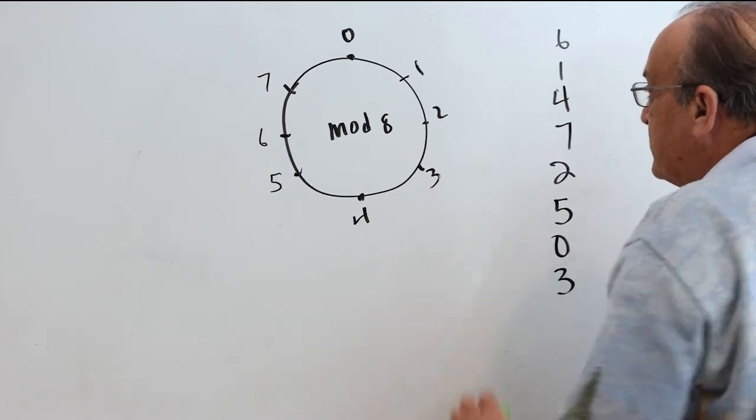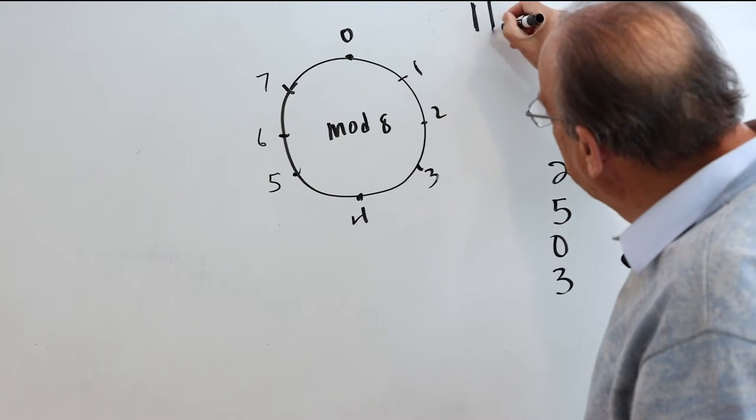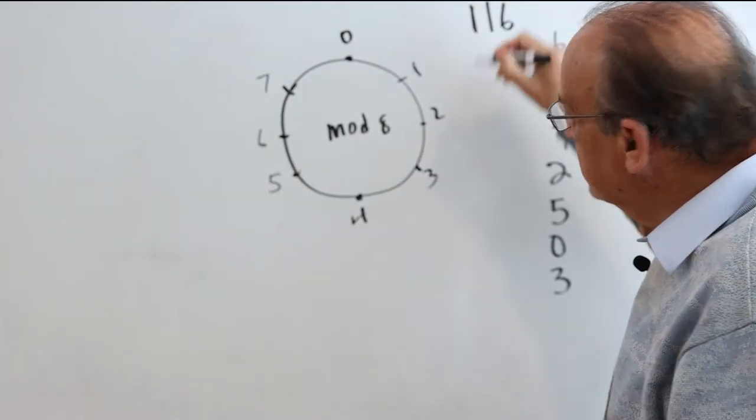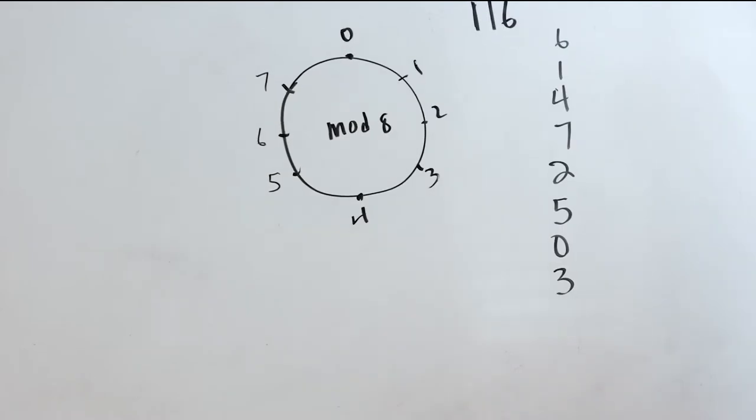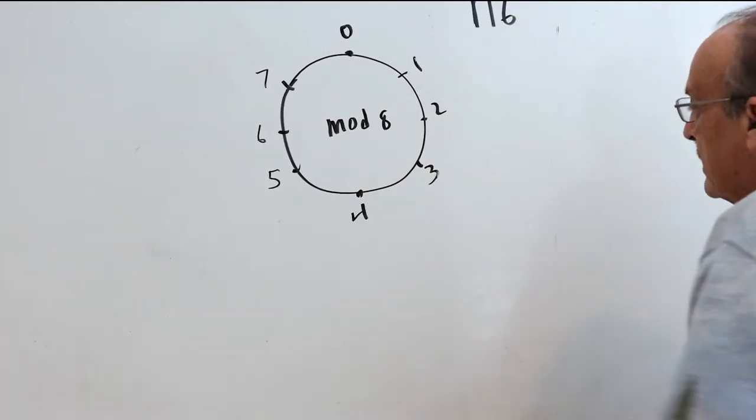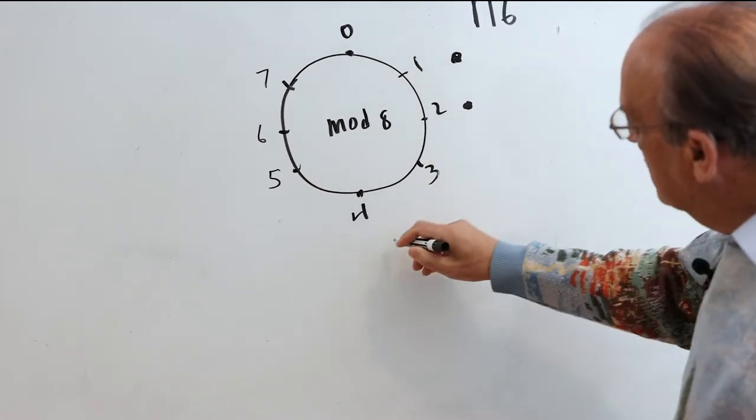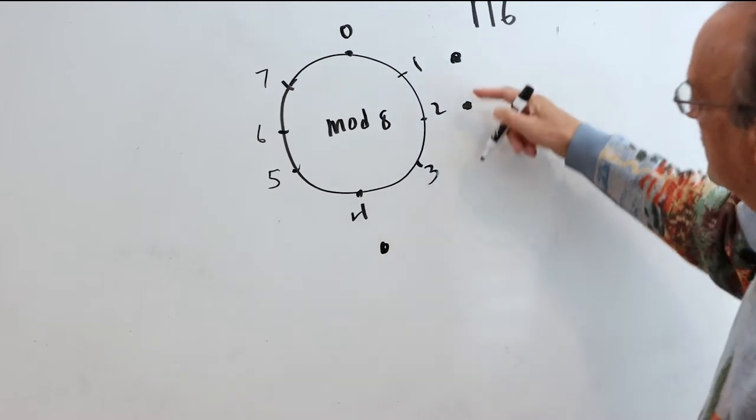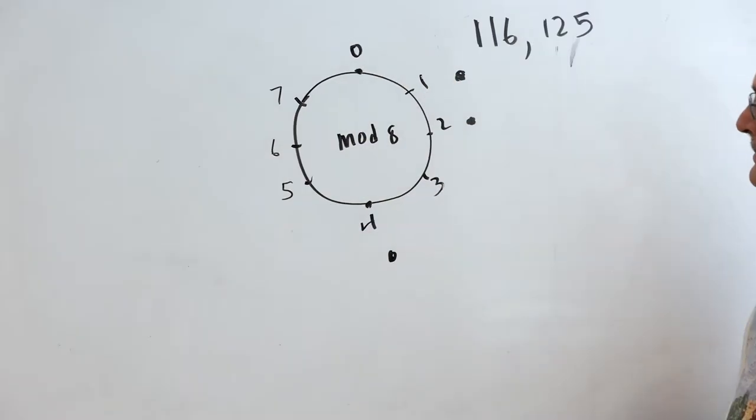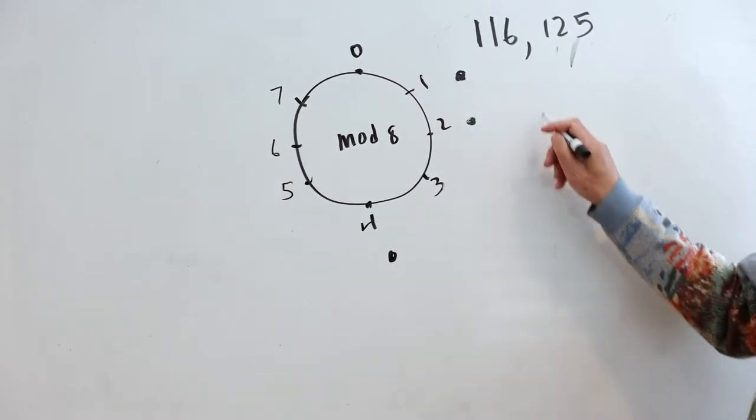Now this particular spacing was a space of 1, a space of 1, and then a space of 6 going around to the beginning. So let's look at a different spacing. Let's look at this spacing. So we have a space of 1, a space of 2, and a space of 5.